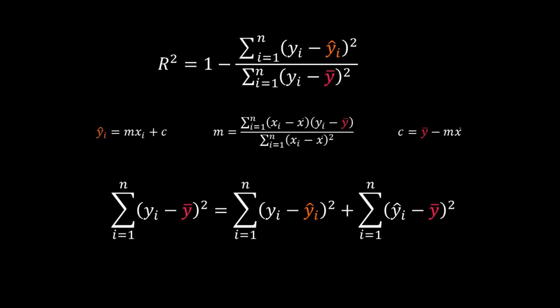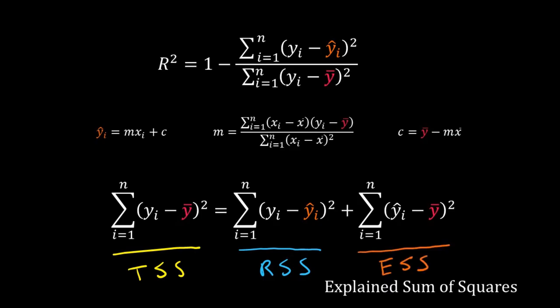...equals the summation of (yi - ŷi)² plus the summation of (ŷi - ȳ)². Remember here yi is the data, ŷi is the value from the fitted line, and ȳ is the average of the data. Now the left hand summation is the TSS. The first summation on the right hand side is the RSS. Now we are left with another summation: summation of (ŷi - ȳ)². This is called the ESS, Explained Sum of Squares. So TSS is equal to RSS plus ESS.